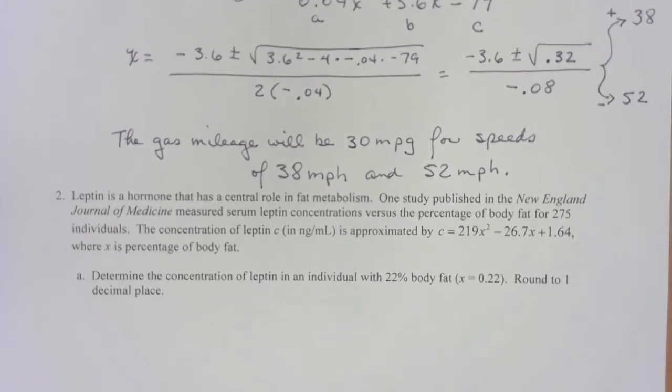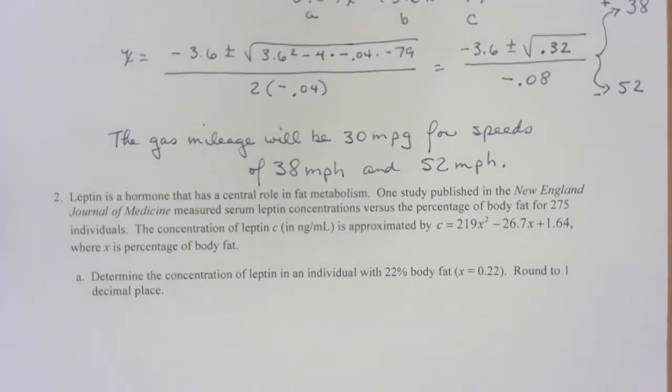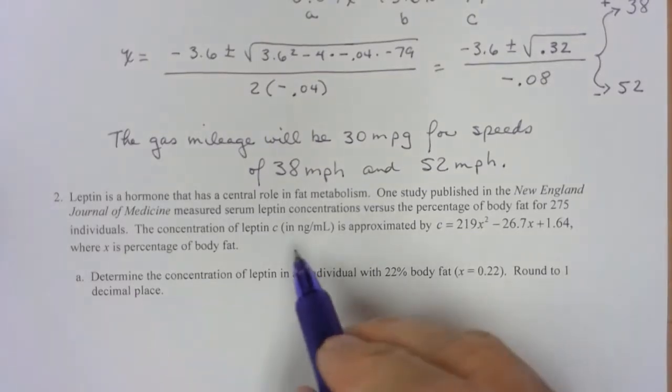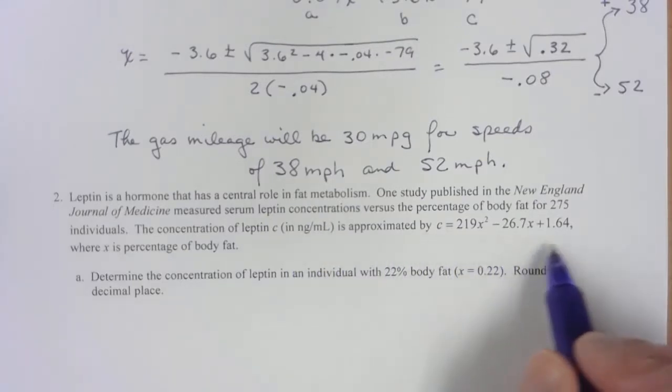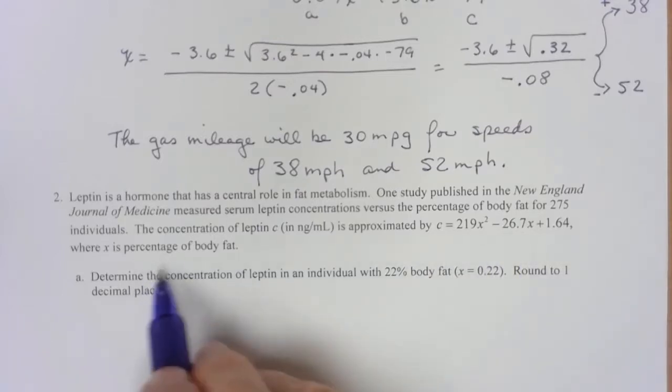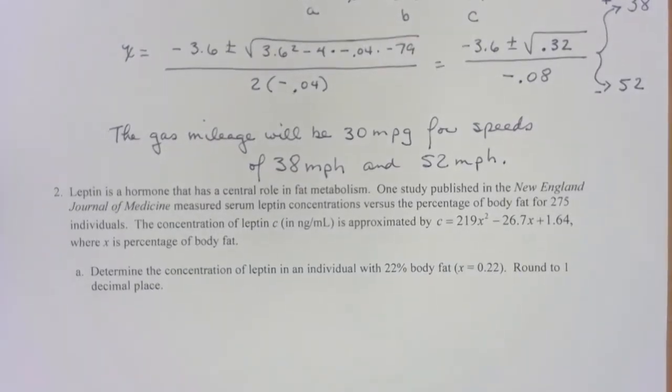Now, leptin is a hormone that has a central role in fat metabolism. One study published in the New England Journal of Medicine measured serum leptin concentrations versus the percentage of body fat for 275 individuals. The concentration of leptin, which is C, I don't know if that's nanograms per milliliter, I might have to look that up, is approximated by this equation where x is the percentage of body fat. So in the first one, it wants us to determine the concentration of leptin in an individual with 22% body fat.